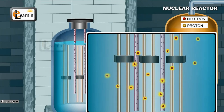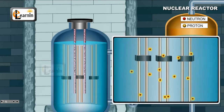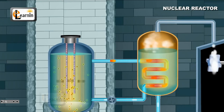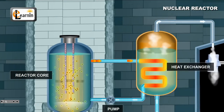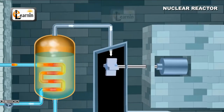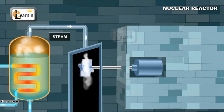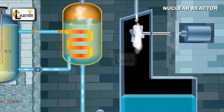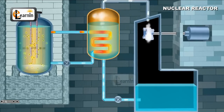A steady output of energy can be maintained by inserting or removing the control rods in the nuclear reactor. The reactor is usually enclosed in a shield made of thick concrete walls and consists of a reactor core, pump, and heat exchanger. Due to the enormous heat released during fission, the surrounding water gets heated up and changes to steam, which turns the turbines — huge heat energy gets converted into electrical energy. Water is continuously flowed in and out using the pump.